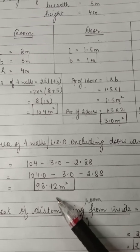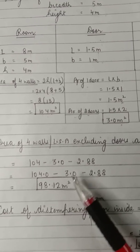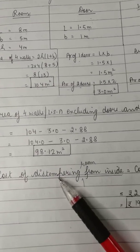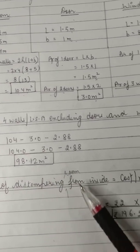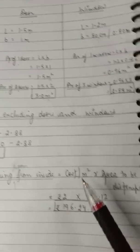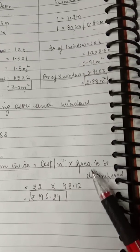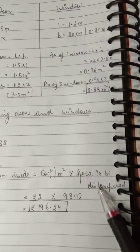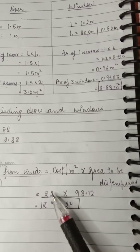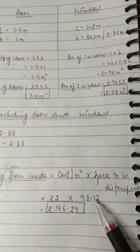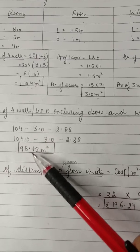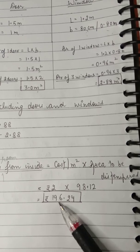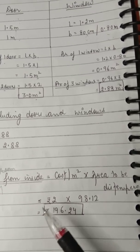After subtracting, we get the net area of four walls as 98.12 meter square. For the cost of distempering — which means painting the room from inside — cost = rate × area = 2 × 98.12 = 196.24 rupees.